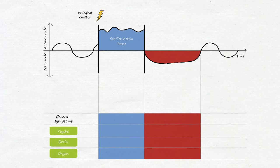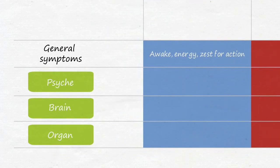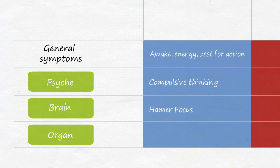So, you are mostly awake, full of energy, and zest for action. As we have already seen, the consequences on the three levels of SBS are compulsive thinking of the psyche, a symptomless characteristic Hamer focus in the brain, as well as functional changes in the organ.